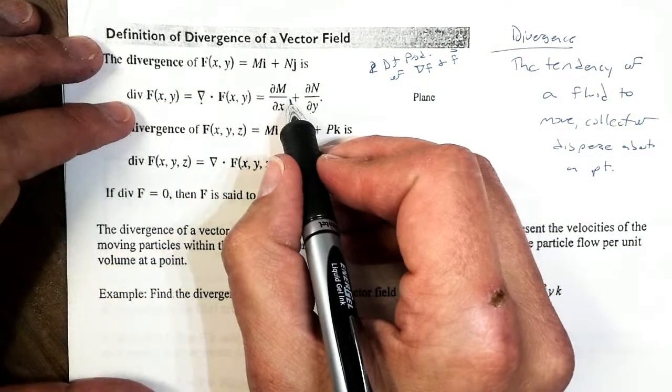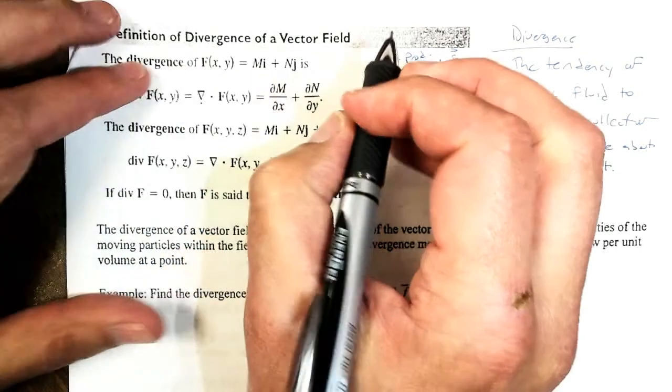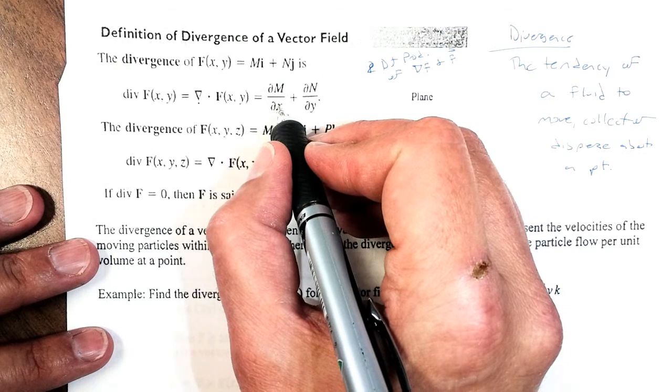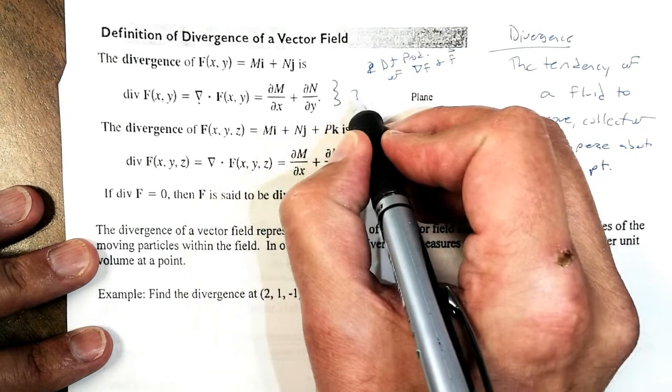And if we take the dot product, remember, if this is my vector field, there's my M, there's my N. The divergence is going to be the partial of M with respect to x plus the partial of N with respect to y. And, of course, this is in two-dimensional or plane.